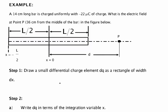In the last video we talked about how to set up a problem involving a continuous charge. In this video we're actually going to work a particular problem to show these steps in action. We have a 14 centimeter long bar that is charged uniformly with minus 22 microcoulombs of charge. What's the electric field at point P, 36 centimeters from the middle of the bar in the figure shown?